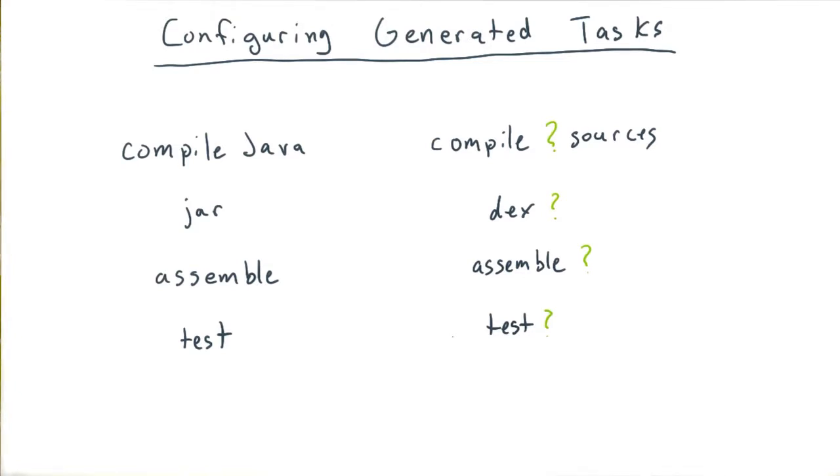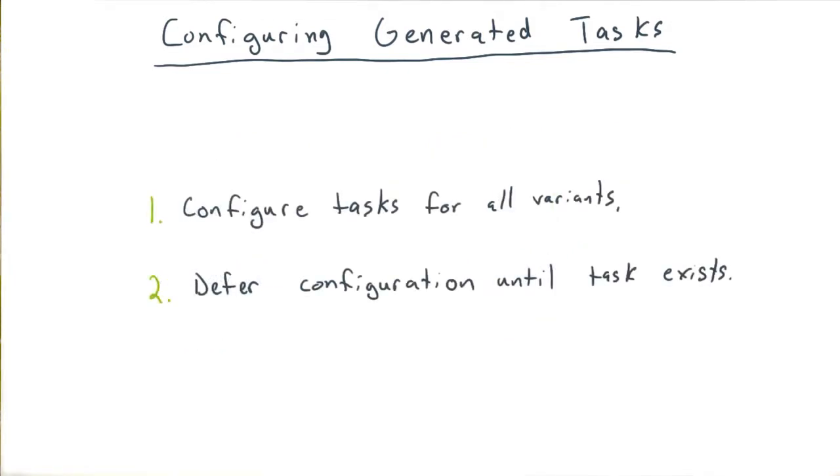Essentially, we need to solve two problems. First, we need a way to reference each task used to build a particular variant without having to know the task's actual name. Quite simply, we want to configure all the tasks of a particular type for every variant.